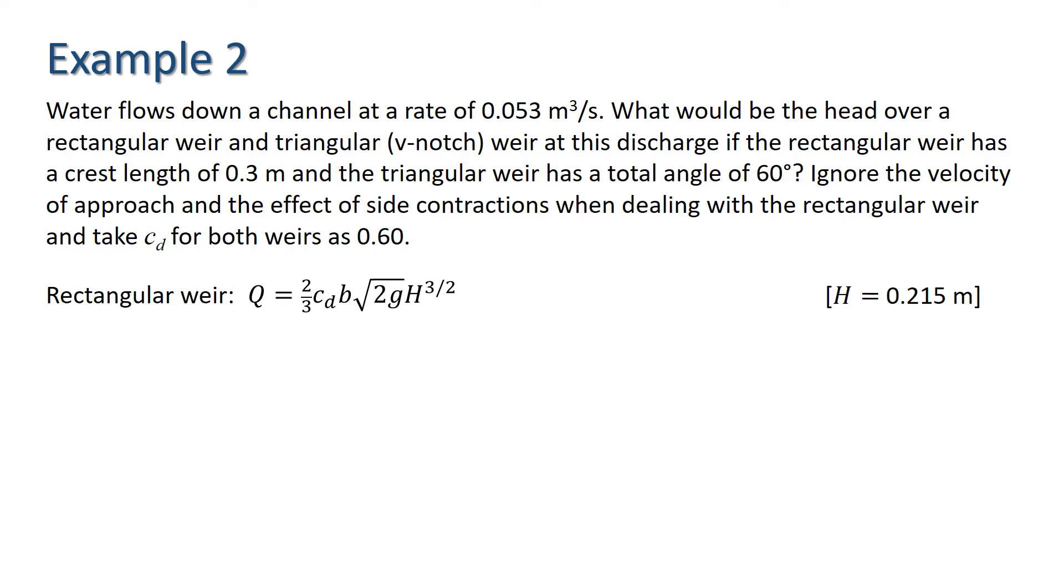Now, looking at the triangular weir, we have the equation Q equals 8/15 CD times tan theta over 2 times root 2 G times H to the power of 5 over 2. In this case, substituting for Q, CD, theta and G and rearranging yields a head of 0.335 metres. In both of these calculations, I've taken the acceleration due to gravity G to be 9.81 metres per second squared.